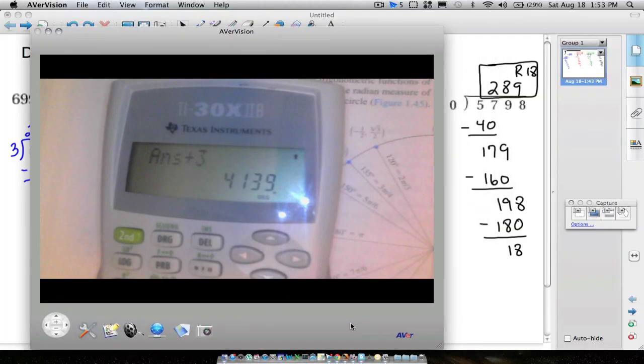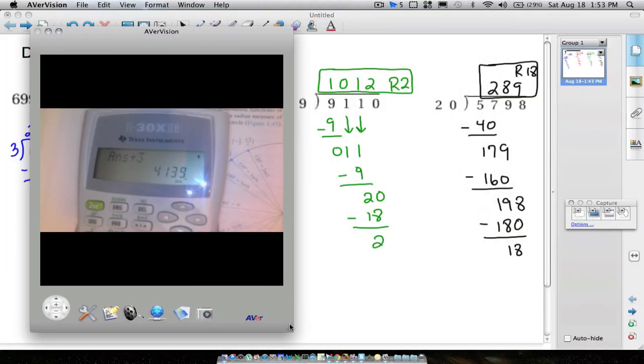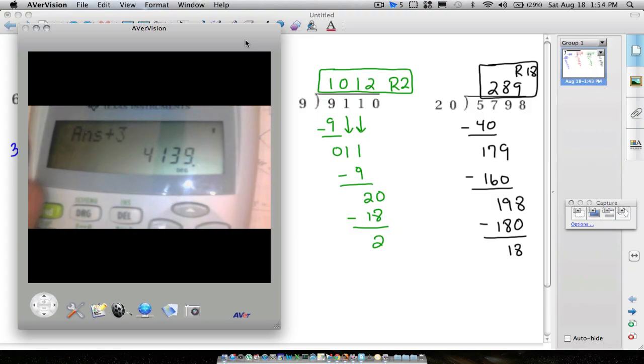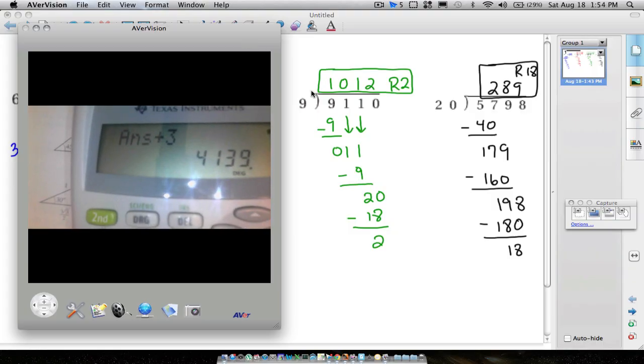All right. Let's move over here to the next one. Let's multiply the outside numbers, 9 times 1,012. 9 times 1,012. We get 9,108, which is not that number, but since your remainder is 2, add 2 to that number. And now notice you do have 9,110.